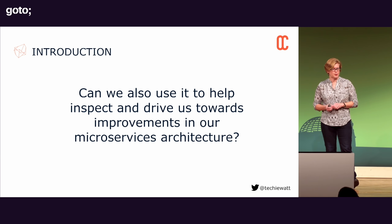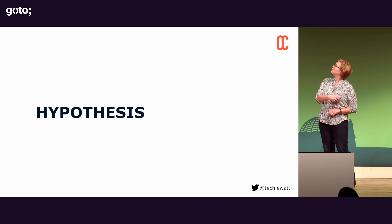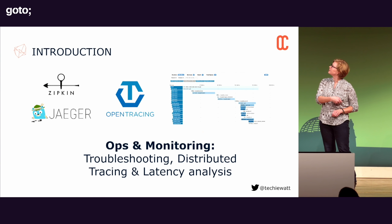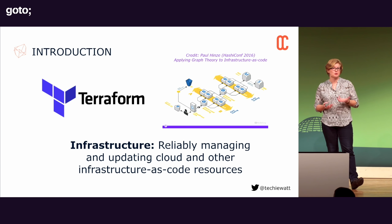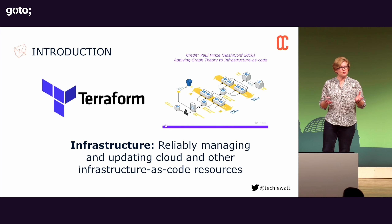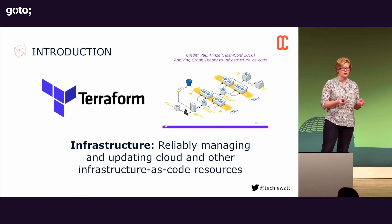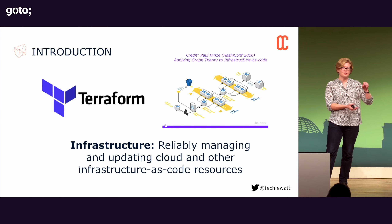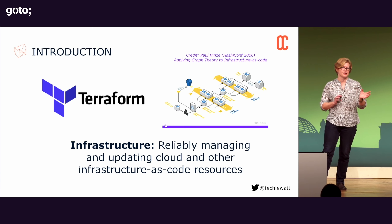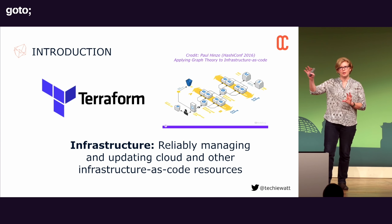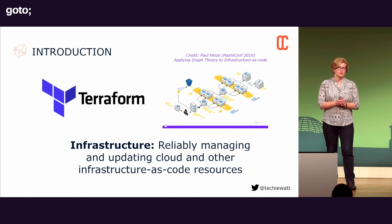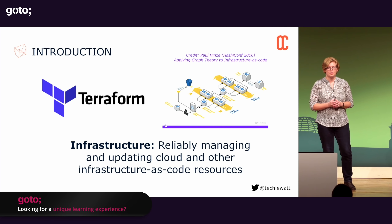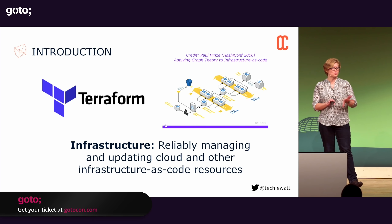Likewise, it's also used in the infrastructure space. Terraform is a really good example of a technology that uses graph theory under the covers. It's an infrastructure-as-code tool from HashiCorp that lets you define a network of components you want created in a cloud like Amazon or Google. Under the covers, it creates something called a directed acyclic graph, working out how to parallelize options to create infrastructure as fast as possible while ensuring it's created in the right order.